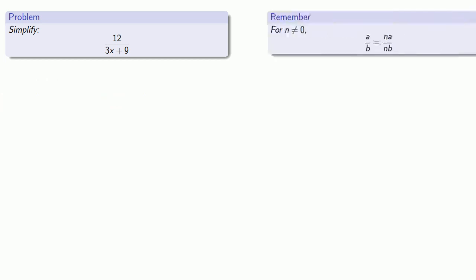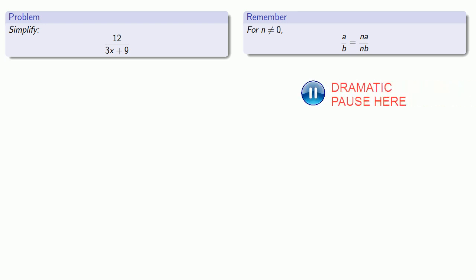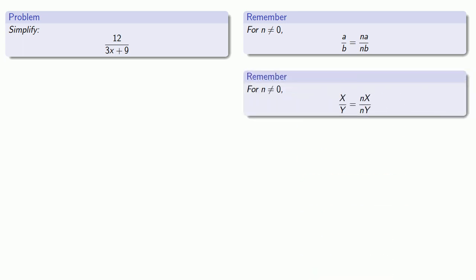It helps to remember what we can do with fractions. So remember, for n not equal to 0, the fraction a over b is equal to na over nb. Now, this rule for fractions only really applies if we're dealing with real numbers. If our expressions are polynomials, we have a radically different rule, which looks like this. For n not equal to 0, the rational expression x over y is the same as nx over ny. And again, we can multiply numerator and denominator by the same thing. Or, if we have a common factor in numerator and denominator, we can remove it.